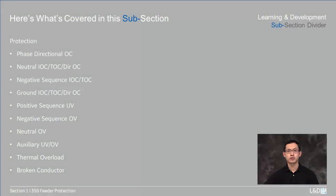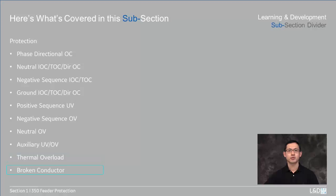In the protection session we'll introduce these functions of 350 feeder relays: phase directional overcurrent; neutral IOC, TOC and directional overcurrent; negative sequence IOC and TOC; ground IOC, TOC and directional overcurrent; positive sequence undervoltage; negative sequence overvoltage; neutral overvoltage; auxiliary undervoltage and overvoltage; thermal overload; and broken conductor.